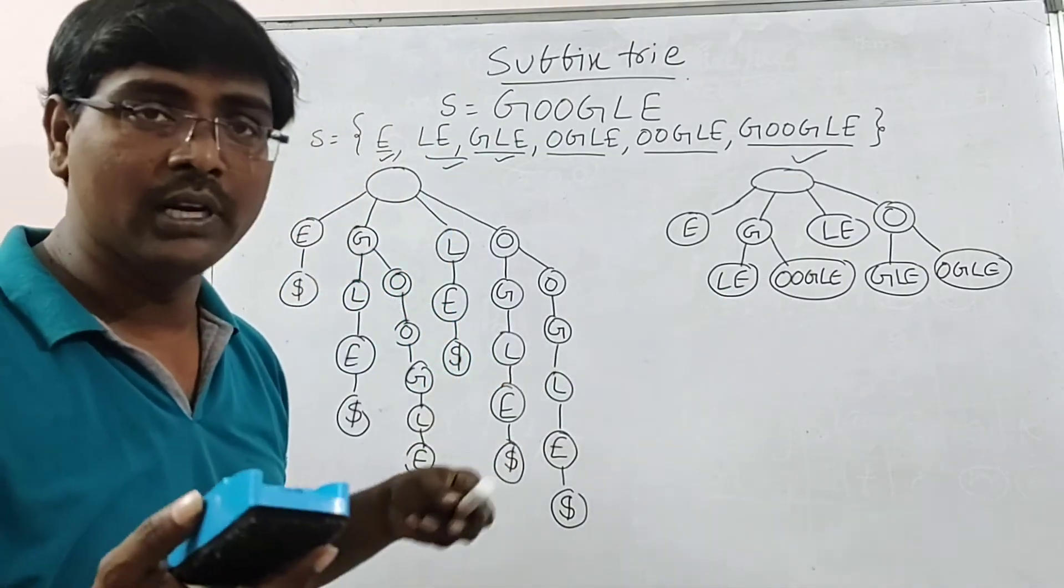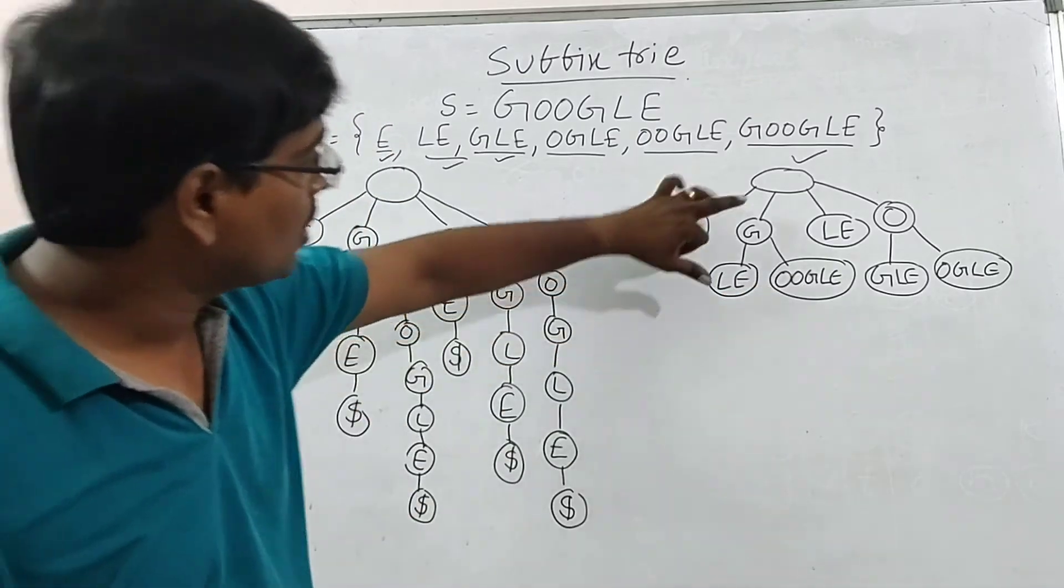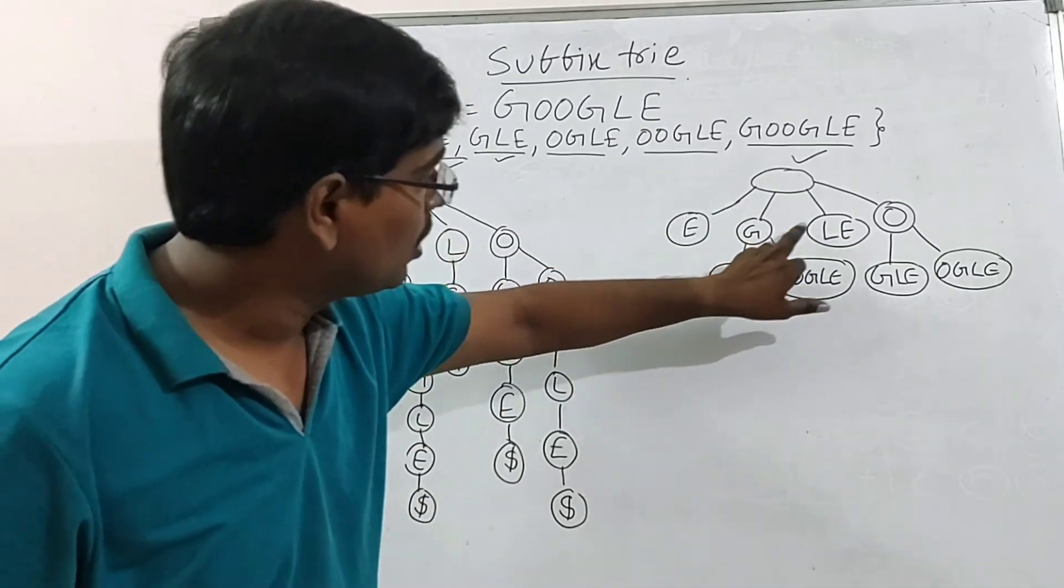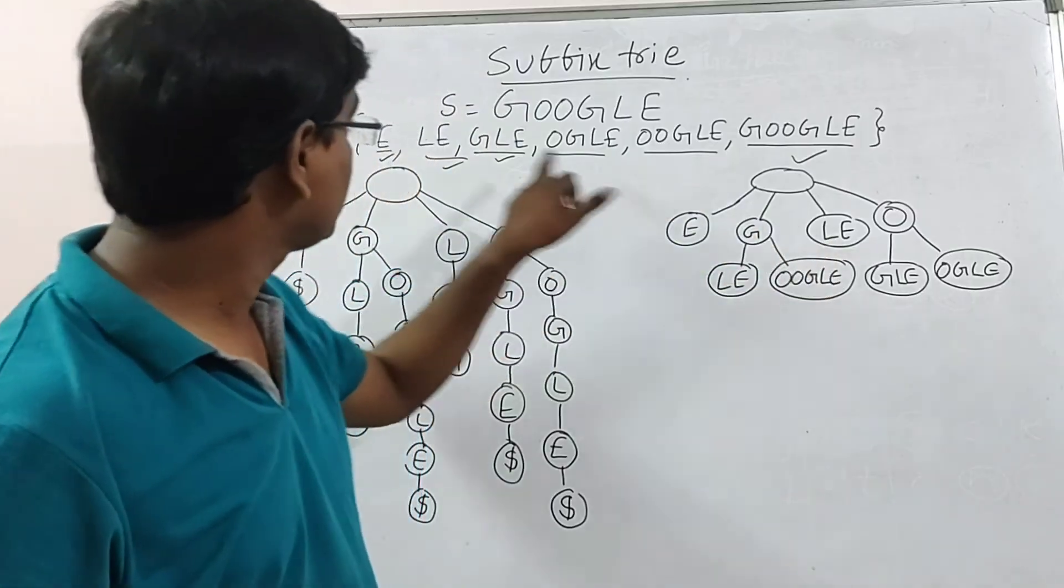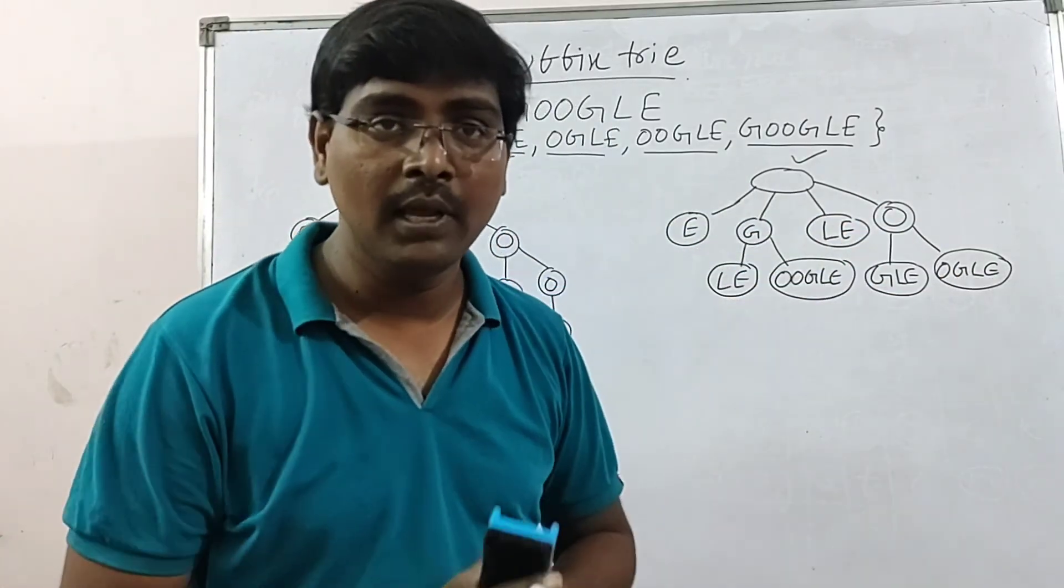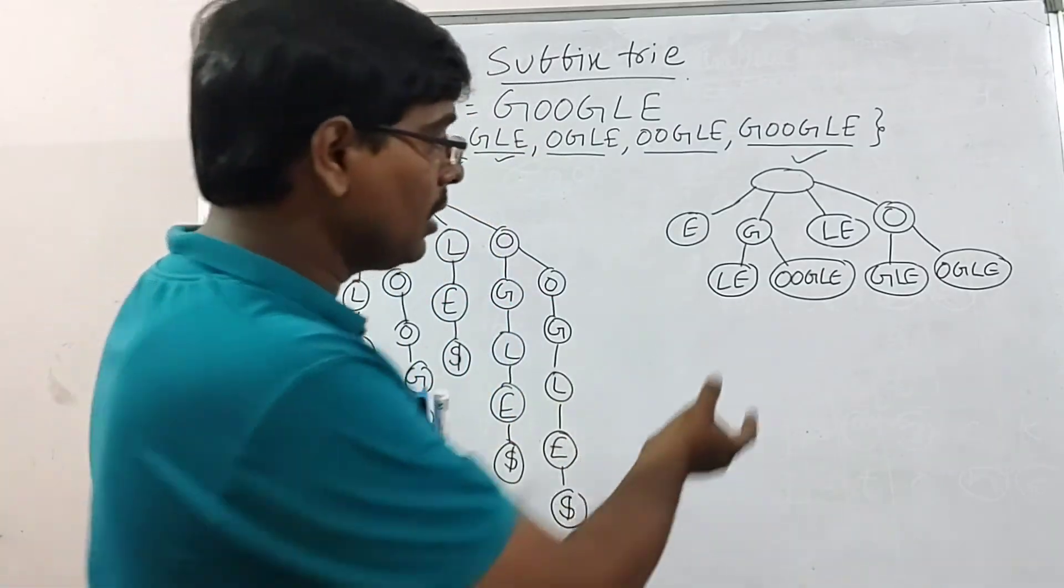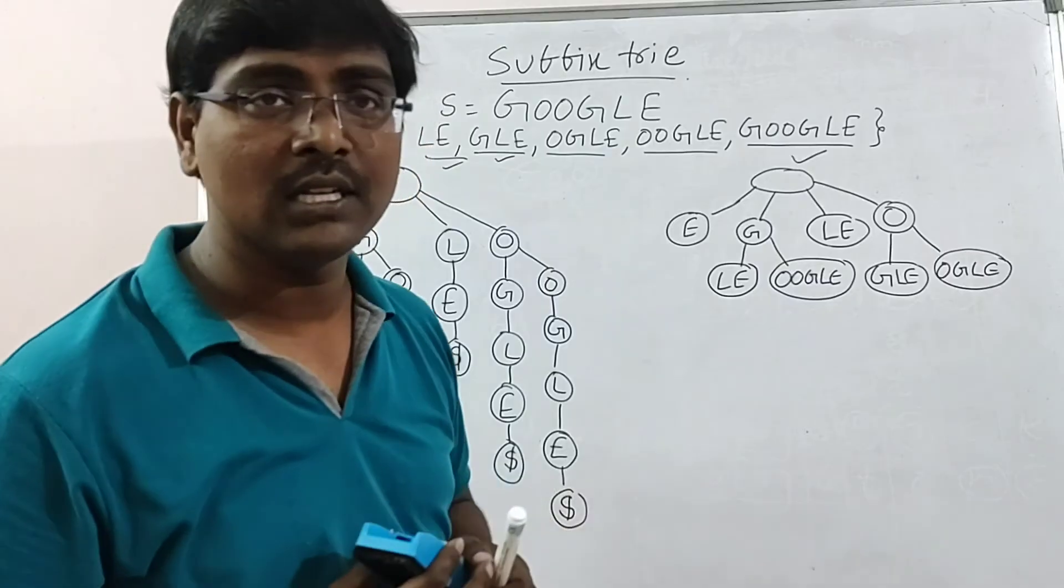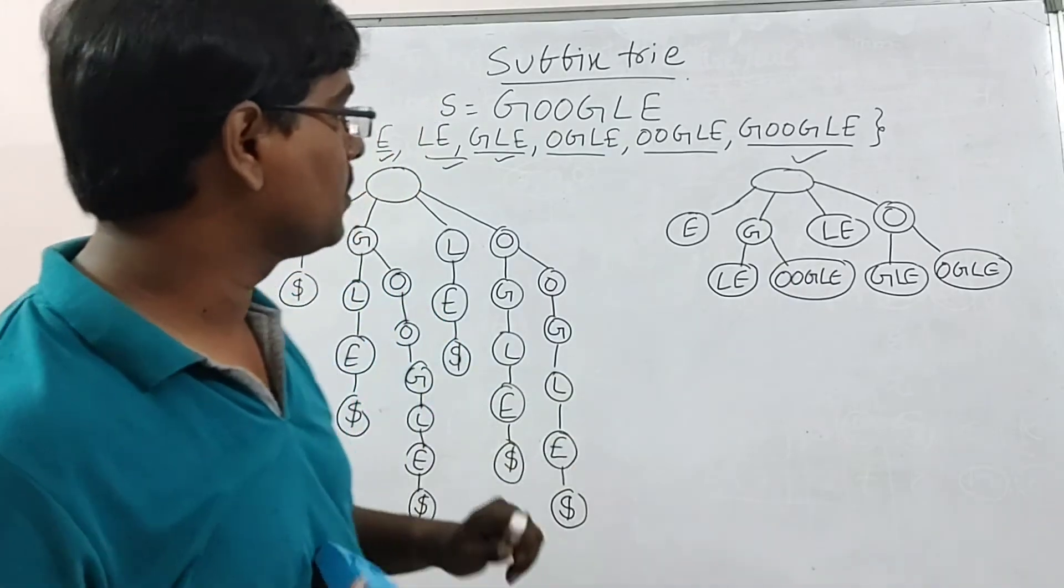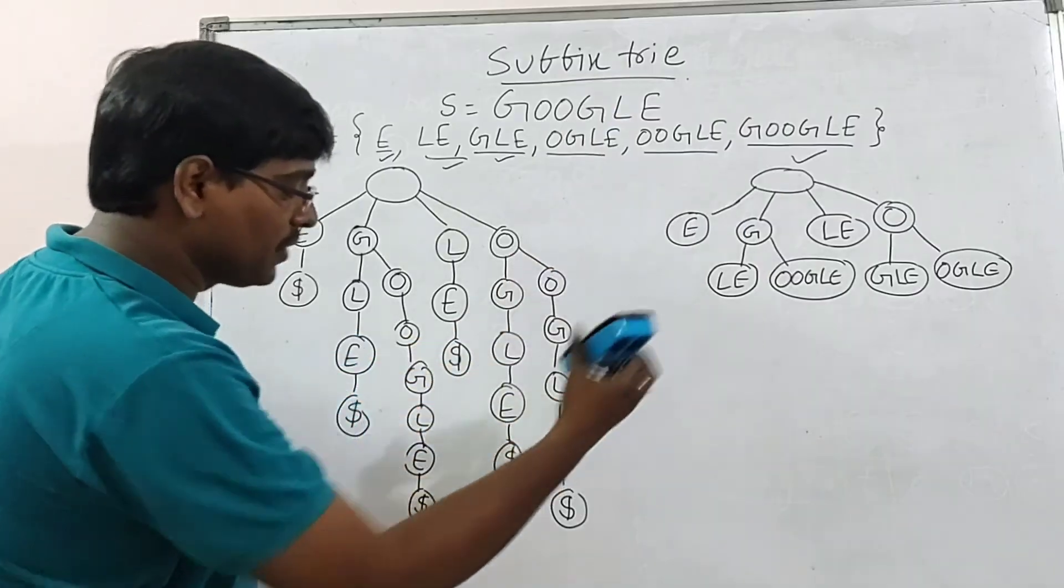This is the compressed trie for the given standard trie. Observe how much space is utilized. Instead of each and every node, we need some memory. Here within the single node, you can take any string. Google, L-E. This is one suffix. O-G-L-E. O-O-G-L-E. Simply, if I give one string, check whether it is a substring or not. This is the way to construct the suffix trie.